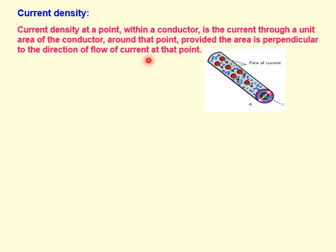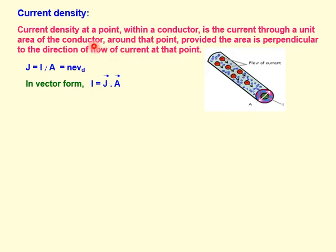The current flow is perpendicular to the circular cross-sectional area. The formula is J = I/A, where J is the symbol for current density. Since I = n·e·A·Vd, dividing by A we get J = n·e·Vd. This is the relation between current density and drift speed. J is directly proportional to Vd. This question — derive the relation between current density and drift velocity — has appeared in the CVC board exam.